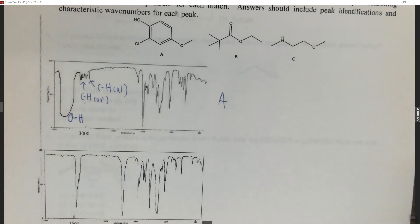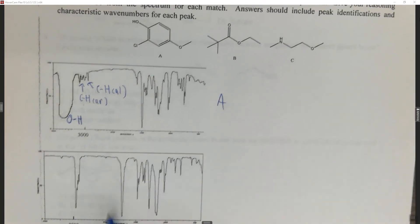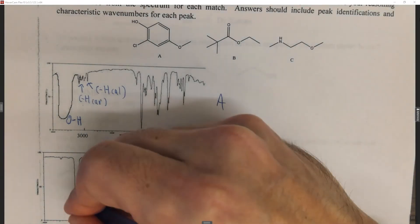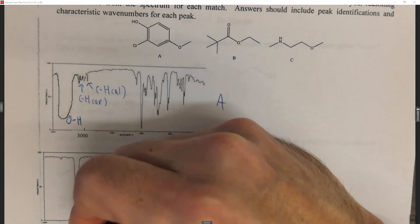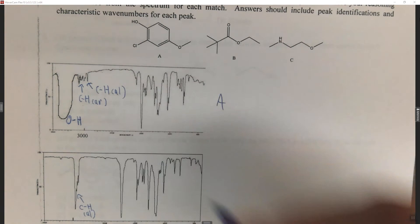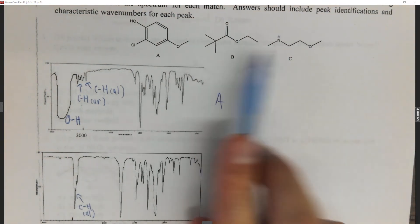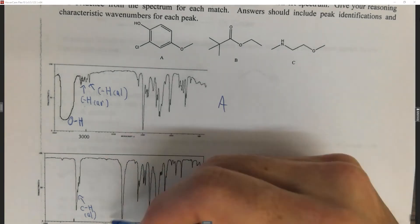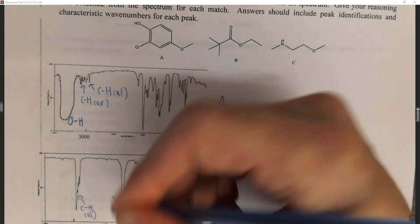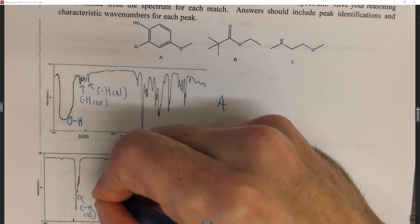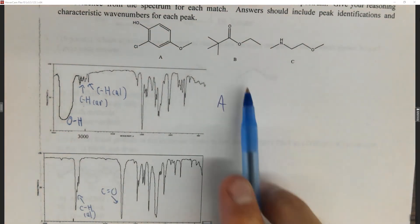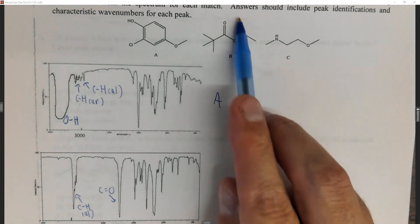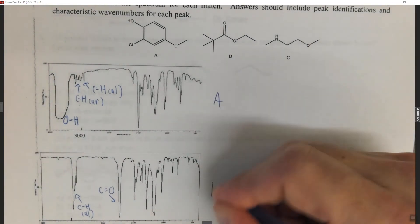Now let's look at the second one. There's no OH peak. We have CH peaks, but they are non-aromatic. That's not enough to distinguish these two alone since neither has an aromatic ring. But this broad peak around 1700 cm⁻¹ is your C=O carbonyl peak. Looking at the remaining compounds, the only one that has a carbonyl C=O is choice letter B.